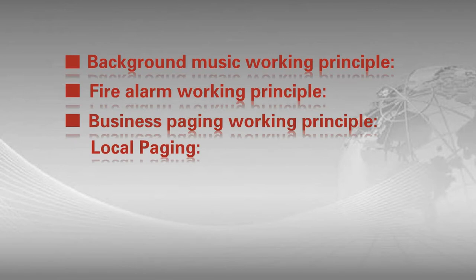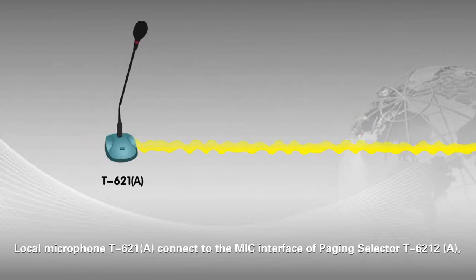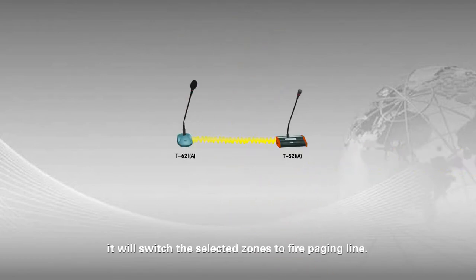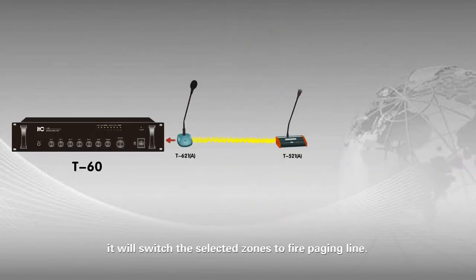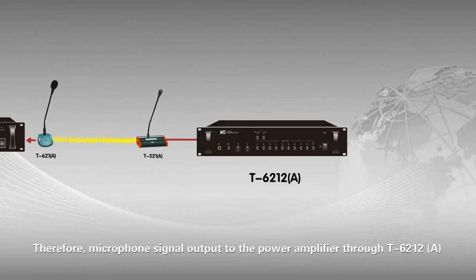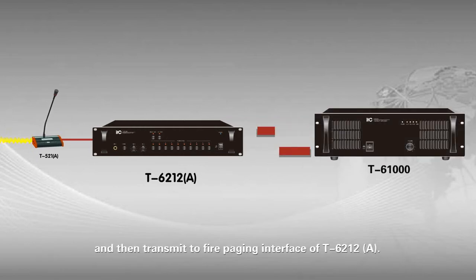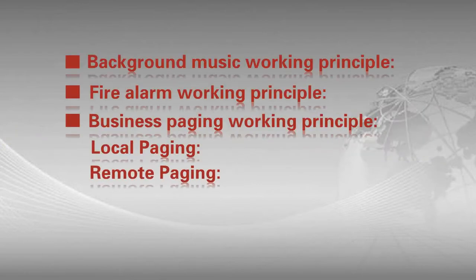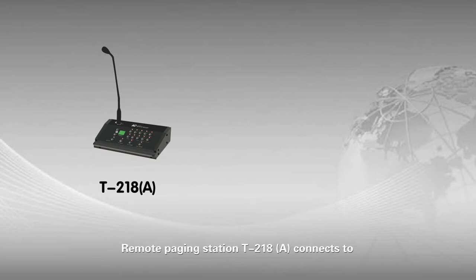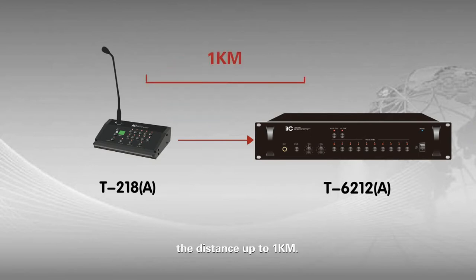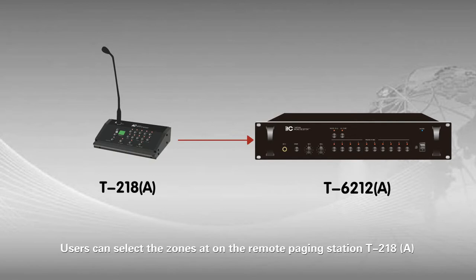Business paging working principle. Local paging: the local microphone connects to the mic interface of paging selector T6212A, then the zone to broadcast is chosen manually, switching the selected zones to the fire paging line. The microphone signal outputs to the power amplifier through T6212A and then transmits to the fire paging interface. Remote paging: remote paging station T6212A connects to paging selector T6212A via network cable up to 1000 meters; users can select zones on the remote paging station T2188A directly to broadcast.